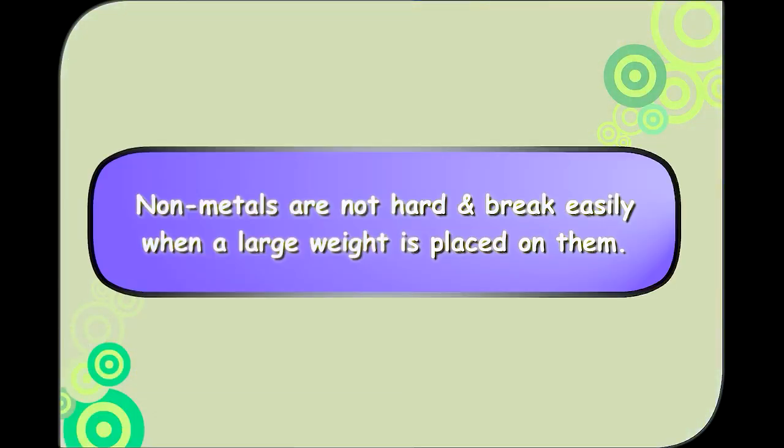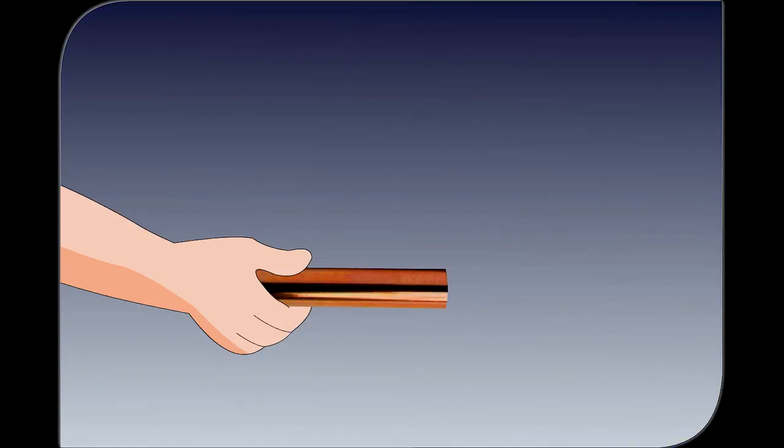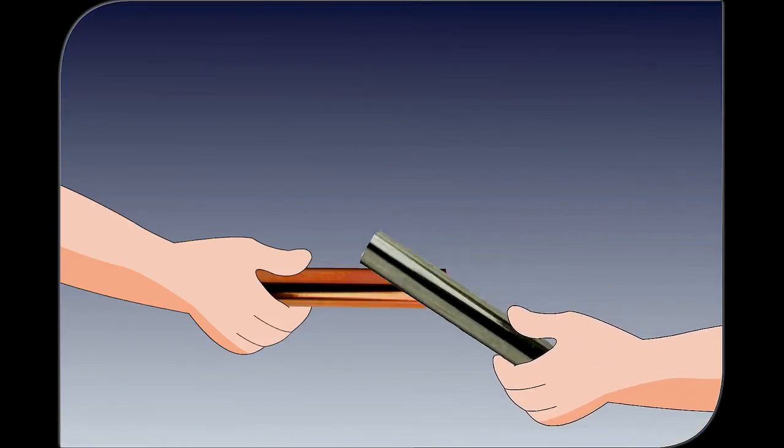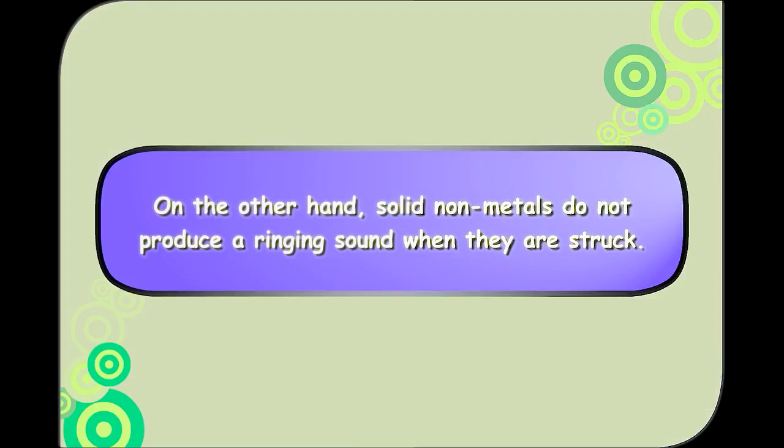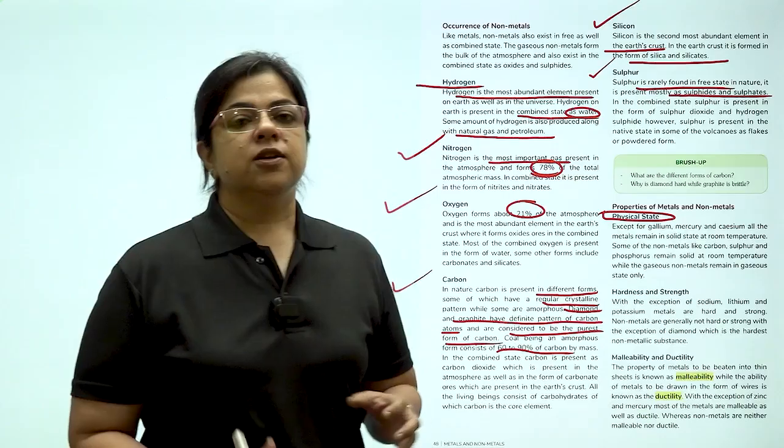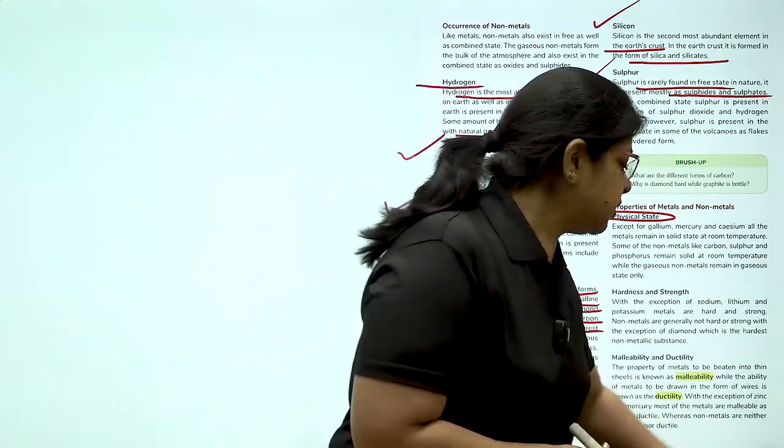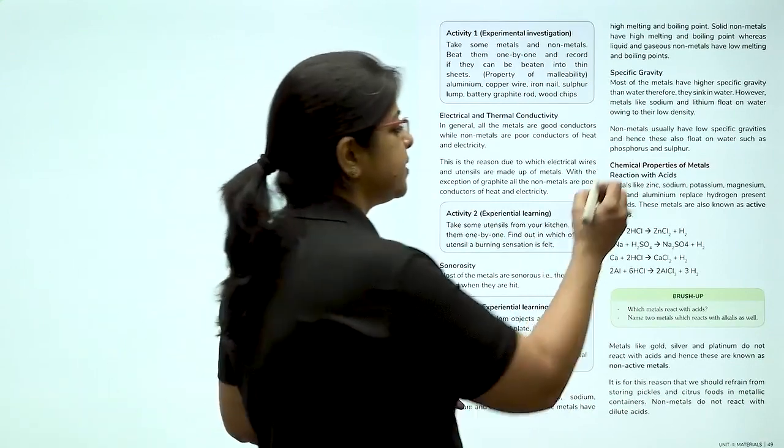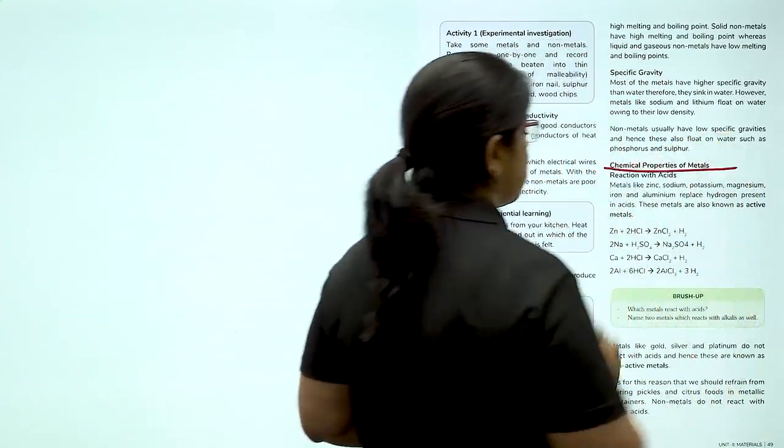Non-metals are not hard and break easily when a large weight is placed on them. Metals produce a ringing sound when they are struck with a hard material. This property of metals is called sonority. On the other hand, solid non-metals do not produce a ringing sound when they are struck. So children, here we have understood the different properties of metals and non-metals. Now let us understand the chemical properties of metals.